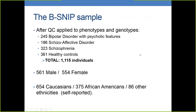The whole BISNIP sample contains 2,400 individuals, but after QC and keeping only those cases and controls that had both genotypes and phenotypes, we ended with 1,100 individuals in total. Of them, 245 are bipolar, 186 are schizoaffective, 333 are schizophrenia patients, and 361 are healthy controls.